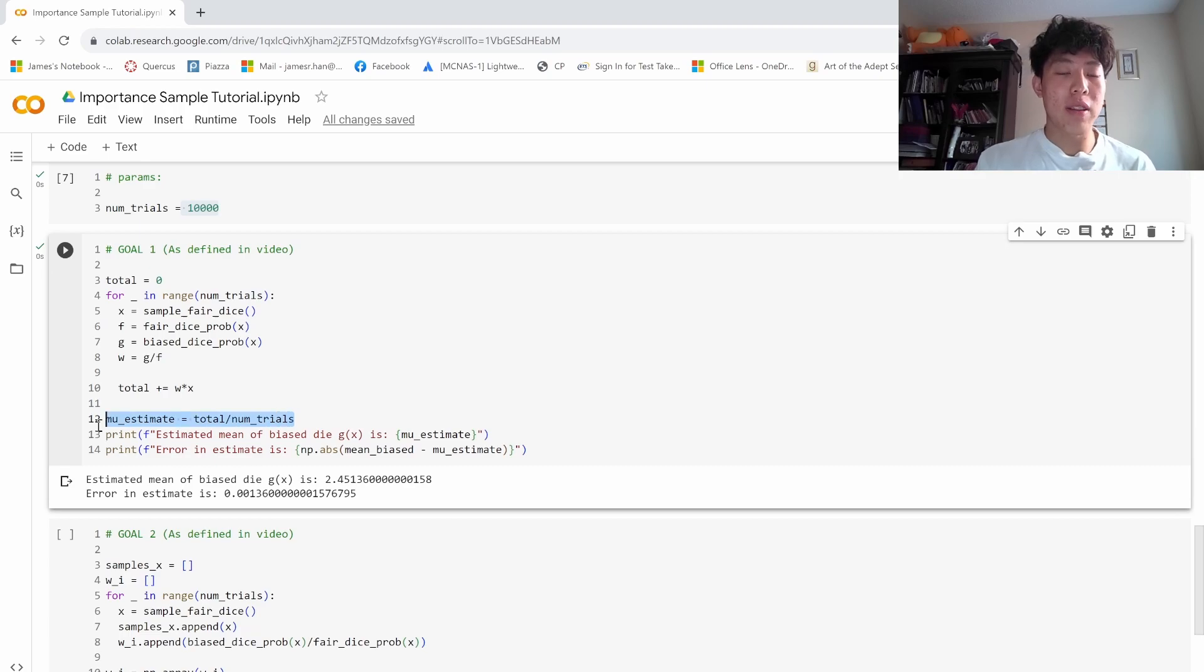Finally, we simply just have to divide by the number of trials to get our estimates. So here we see our estimate is 2.451, which is extremely, extremely close to what the true mean is. So this shows that this method actually does work.